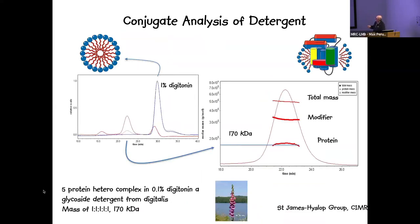Another conjugate analysis example involved detergent surrounding a protein complex of about 170 kDa comprising a series of different subunits. Because it was surrounded by detergent, the mass of the modifier was considerable — much higher than the protein itself — with the total mass of the complex also determined. This is a powerful method for gaining insight into modifiers and detergent associations with your material.